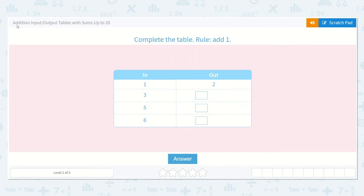Let's take a look at our lesson, Addition Input Output Tables, with sums up to 20. It says, complete the table. Rule, add one.